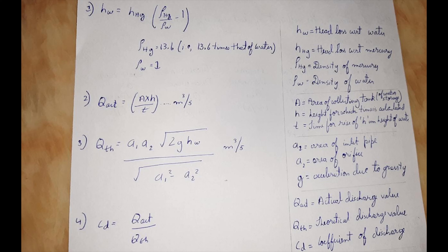Theoretical discharge of water is given by qth. The formula is given as a1 into a2 into under root of 2ghw, divided by under root of a1 square minus a2 square. The a1 and a2 are area of inlet pipe and orifice.